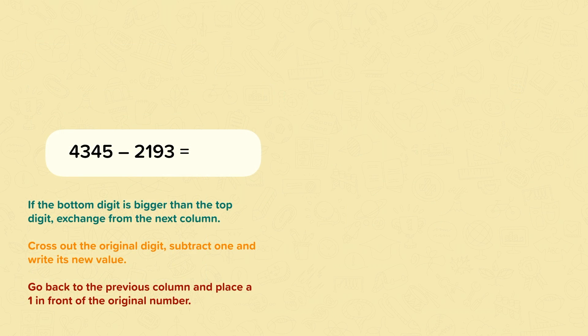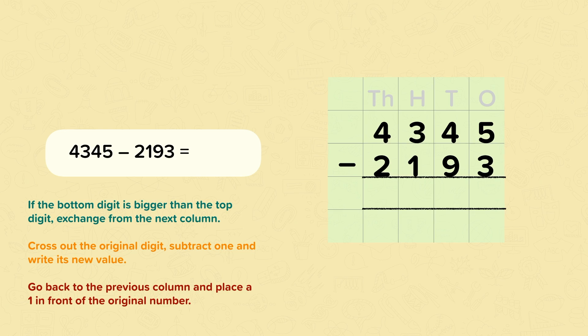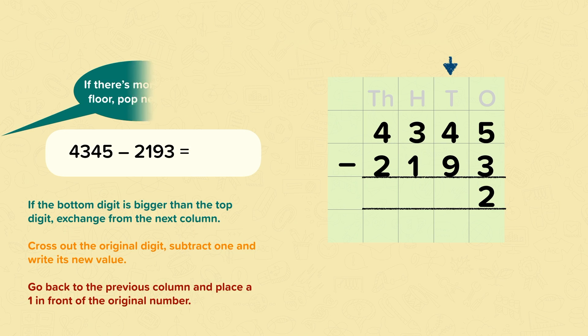Let's have a look at another example. This time four thousand three hundred and forty-five subtract two thousand one hundred and ninety-three. So we set it out like this with every number in the right column, and we start at the ones: five subtract three is two. Then we move over to the tens. Straight away we can tell that we're going to need to exchange in this column, because nine, the number on the bottom, is greater than four, which is the number on the top.